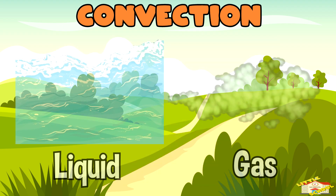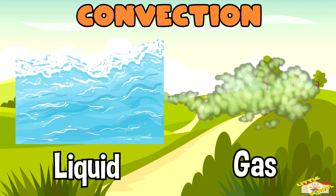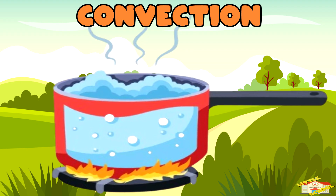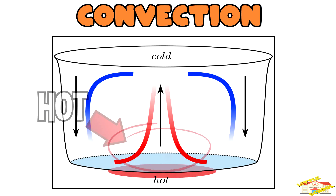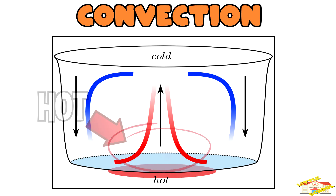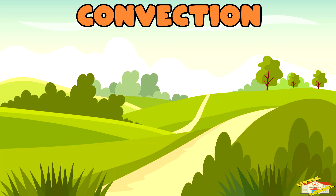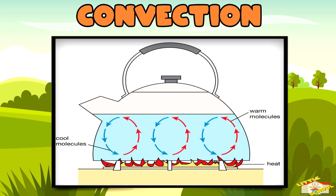Convection is when heat moves through liquids or gases, like air or water. Imagine heating a pot of water — the water at the bottom gets hot first, becomes lighter, and rises, while the cooler water sinks.